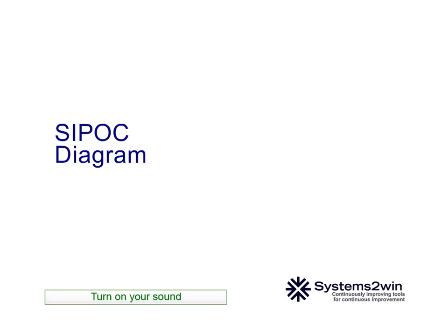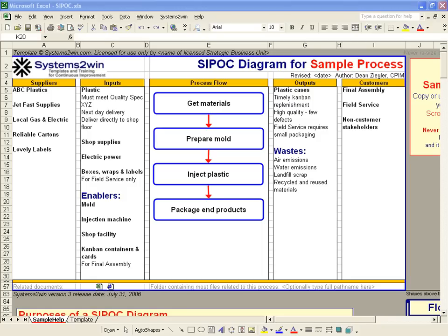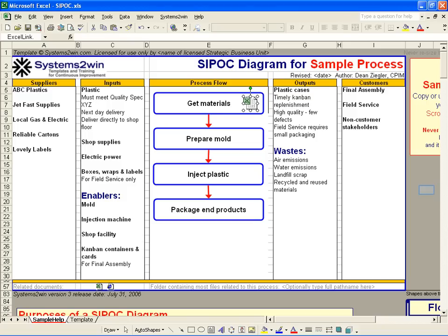The first purpose of a SIPOC diagram is to provide an at-a-glance overview of a process in that center column there. You can always use a link icon to link to a more detailed flowchart of the process, but the flowchart that appears on this SIPOC should be a very simplified process overview.